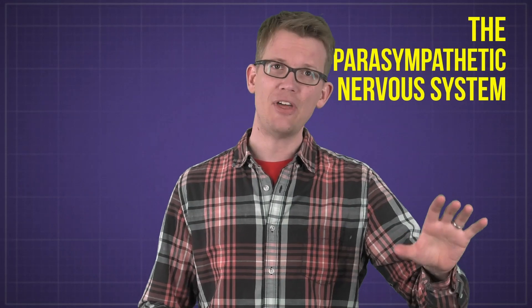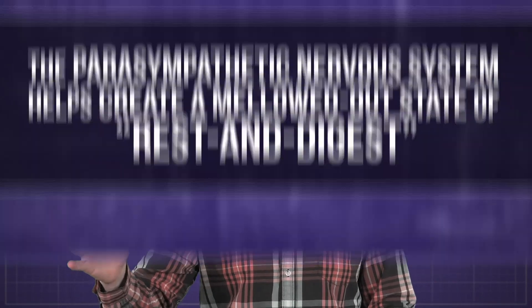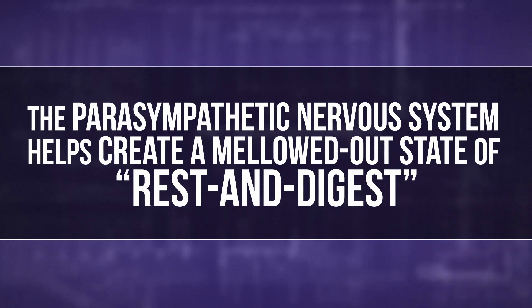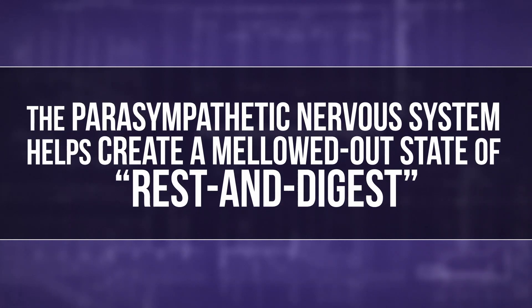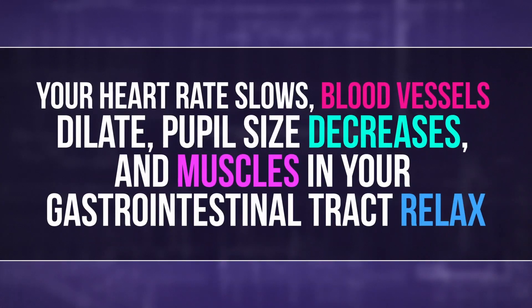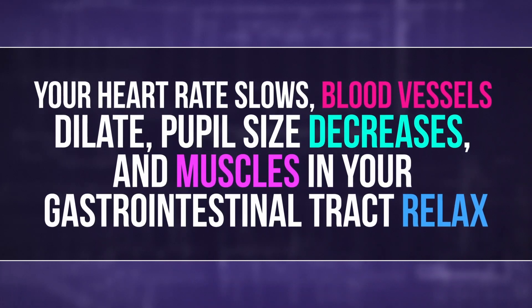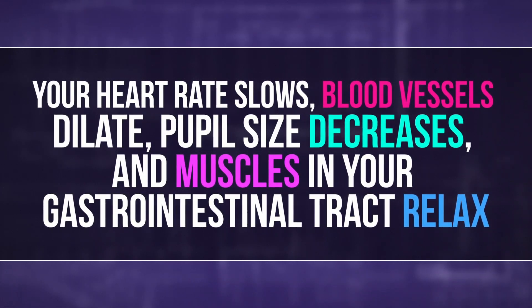And the ANS can be split into two main branches—the parasympathetic and the sympathetic nervous systems. The parasympathetic nervous system helps create a mellowed-out state of rest and digest. Your heart rate slows, blood vessels dilate, pupil size decreases, and muscles in your gastrointestinal tract relax.